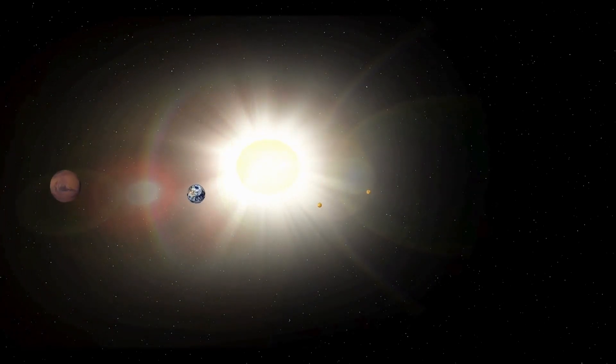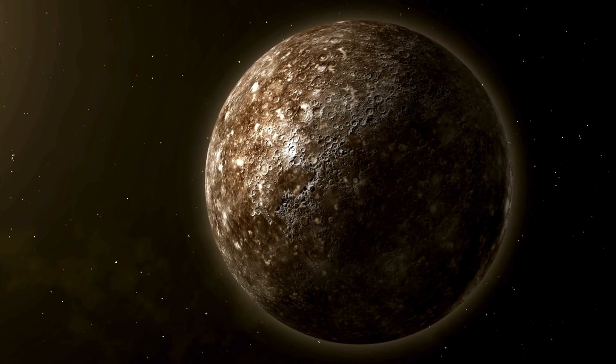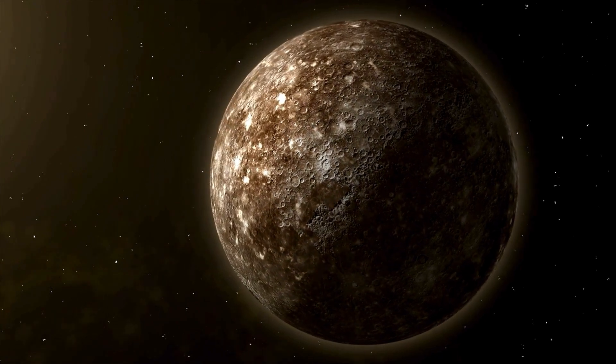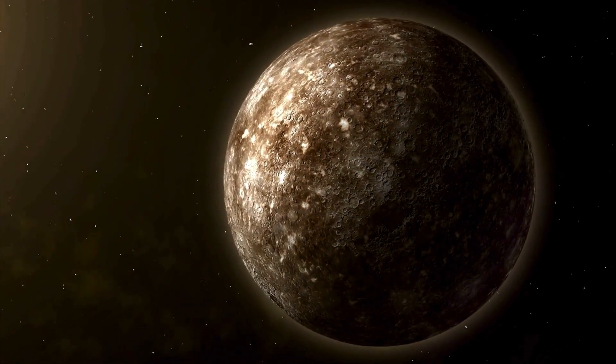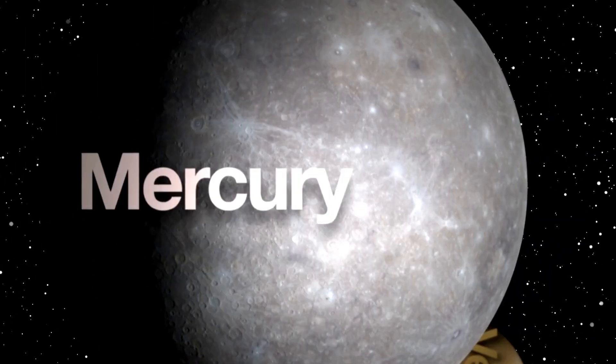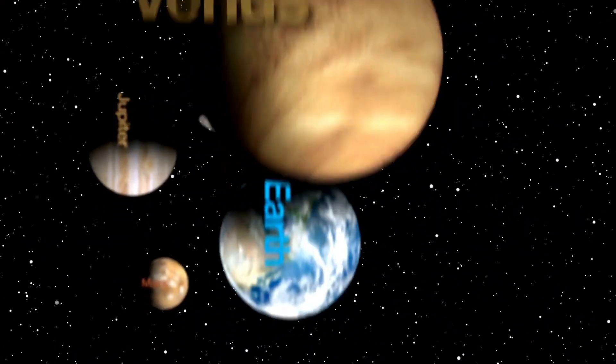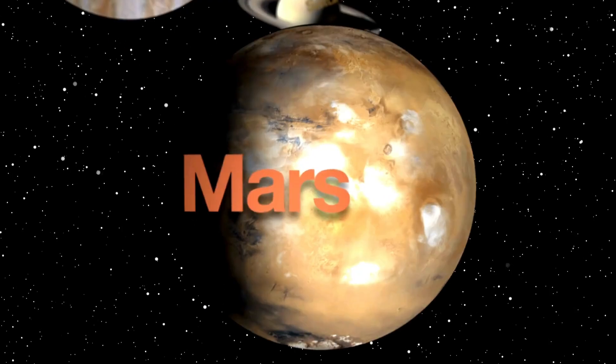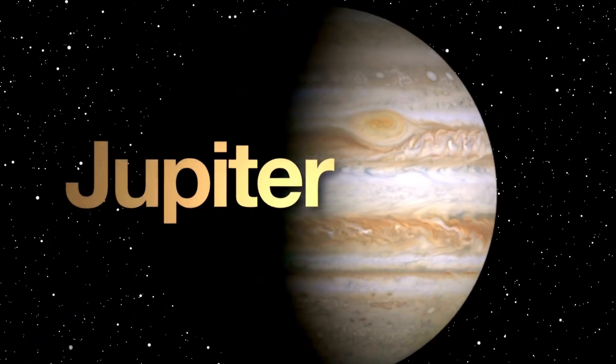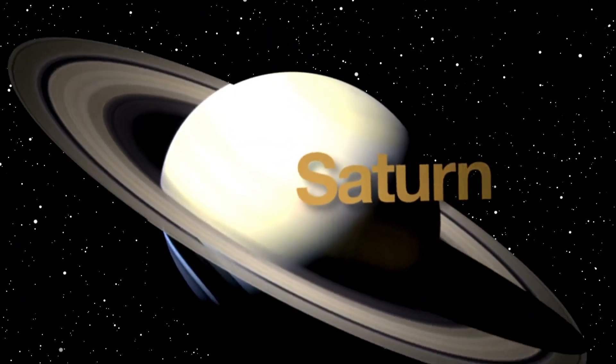The stability of Pluto's orbit amidst these complexities is evidence of the intricacies of space mechanics. The three-body problem in space is about figuring out how three objects in space, like Pluto, Neptune, and the Sun, move and influence each other with their gravity. It's like trying to predict where they will go based on where they start and how they pull on one another.